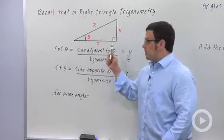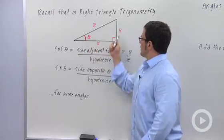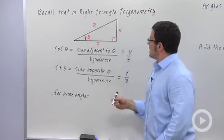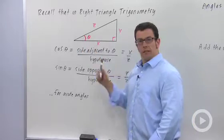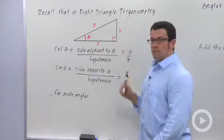It starts with a right triangle, and we'll label the three sides x, y, and z. The acute angle here is theta, and this is a right angle.